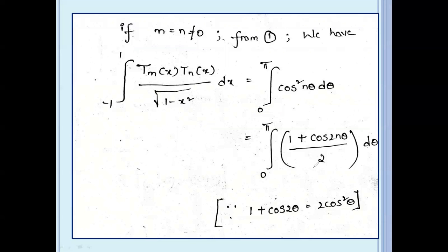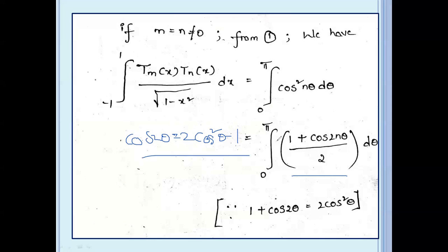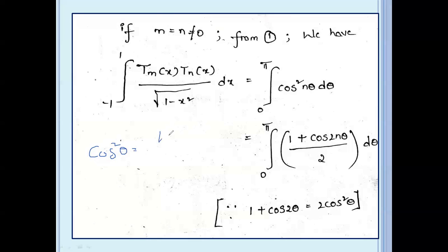We apply the formula: 1 plus cos 2θ equal to 2 cos² θ, so cos² nθ equal to (1 plus cos 2nθ) by 2. Substituting, the integral becomes: integral from 0 to π of (1 plus cos 2nθ) by 2 dθ.